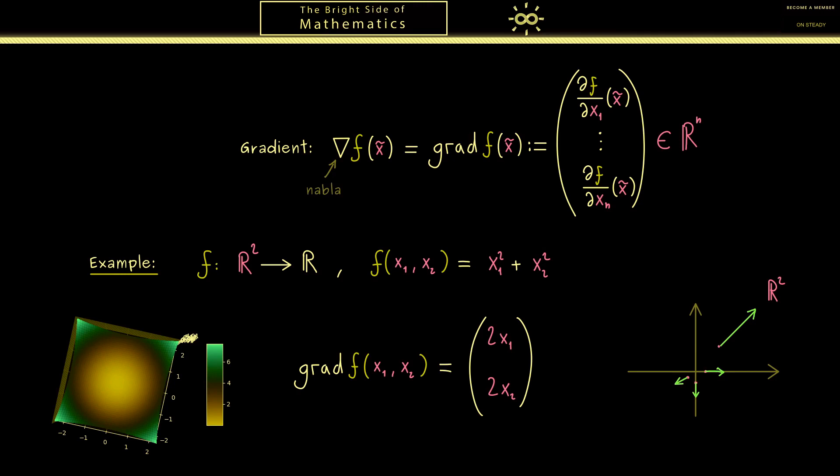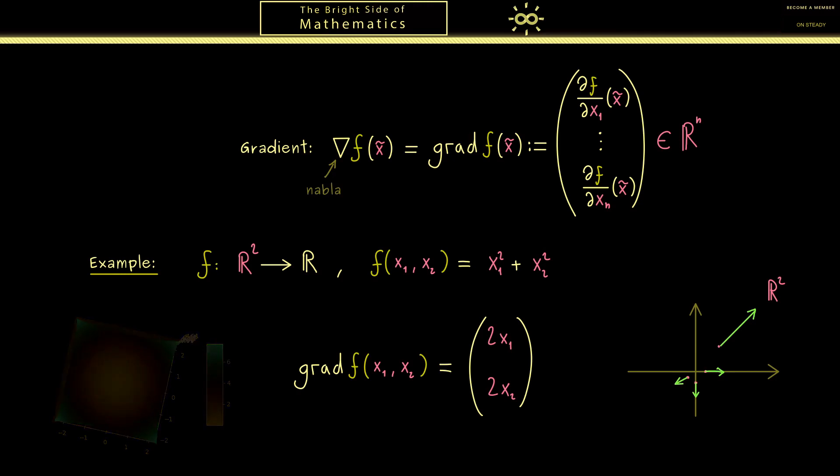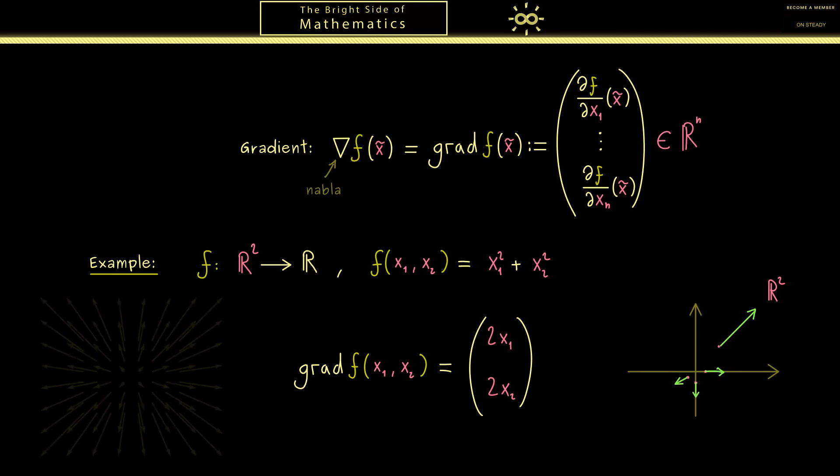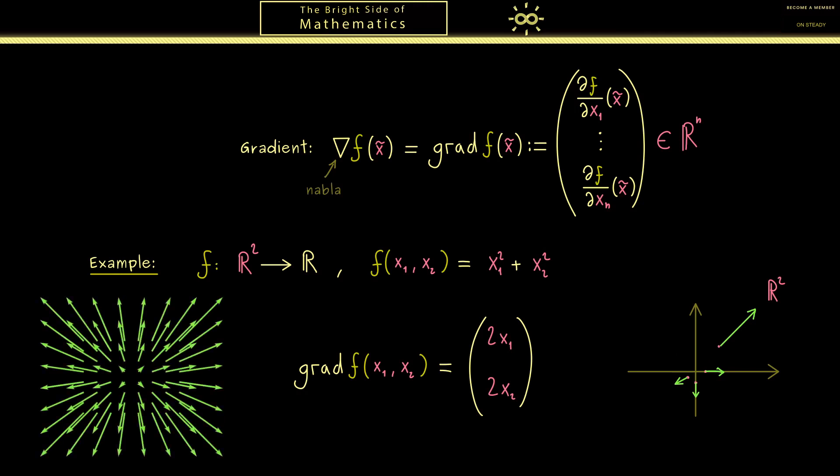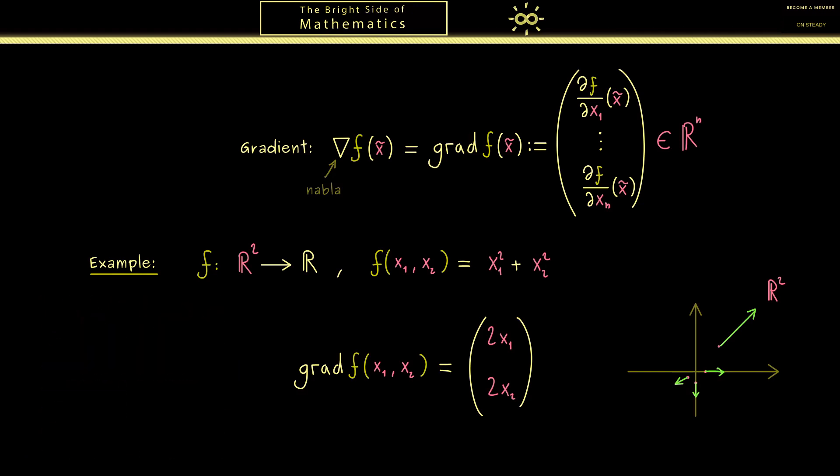However, maybe this is also something we should visualize in Python. So maybe we just do a quick sketch for the directions of the arrows we have here. So they point outwards and what you should see is that they are smaller in the region around the origin and get longer when we go outside. Okay, maybe that's good enough for a sketch.